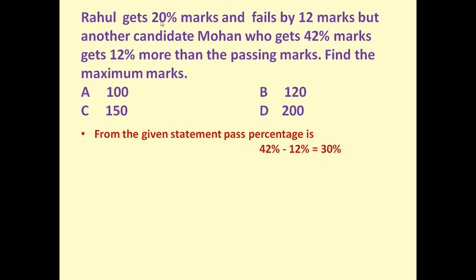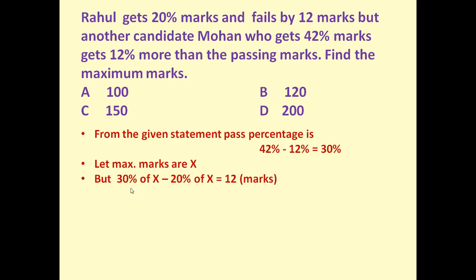Rahul gets 20 percent marks and fails by 12 marks. The passing marks is 30 percent. If we suppose the maximum marks are x, then 30 percent of x minus 20 percent of x is equal to 12, because Rahul fails by 12 marks. So 10 percent of x is equal to 12.